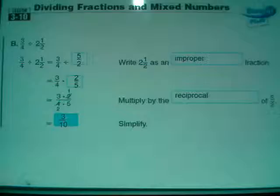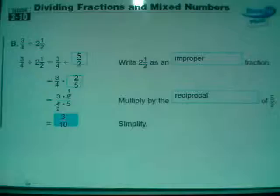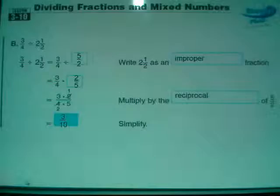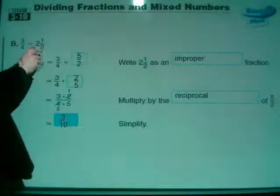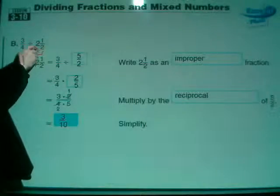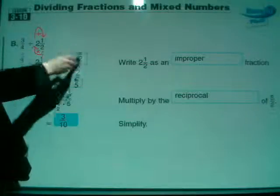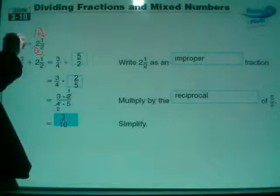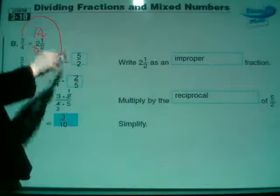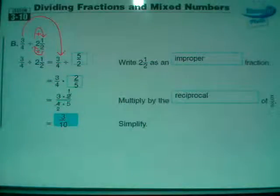Here's another one with mixed numbers. We've got 3 fourths divided by 2 and 1 half. We're going to make that change - change 2 and 1 half here. 2 times 2 is 4, plus the 1 on top gets me 5, and it stays over 2 - that's 5 halves. But 3 fourths still says 3 fourths. So this is 3 fourths divided by 5 over 2.